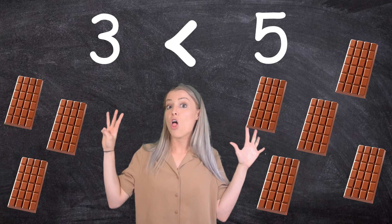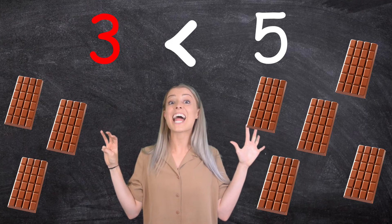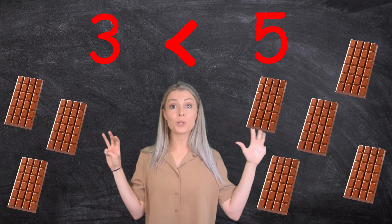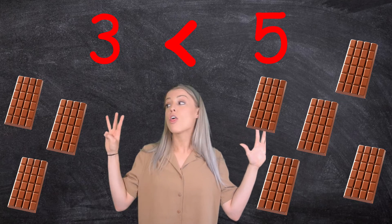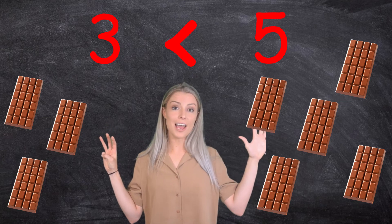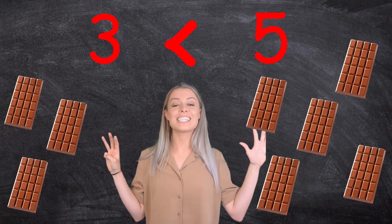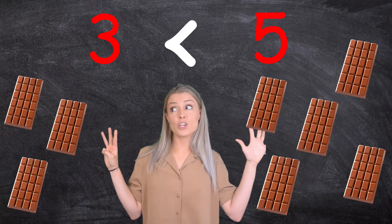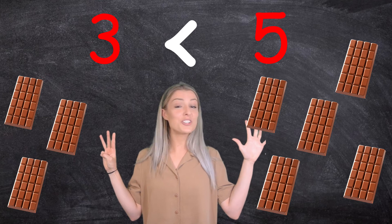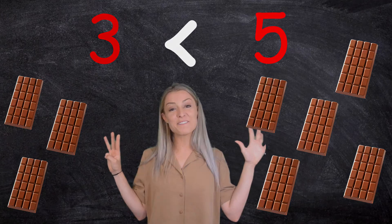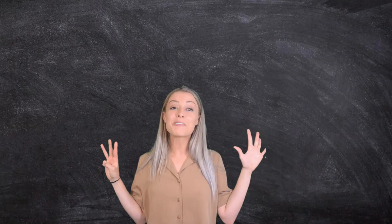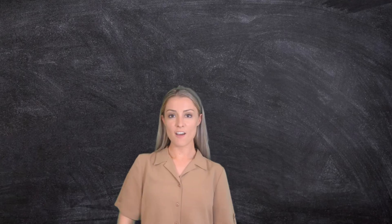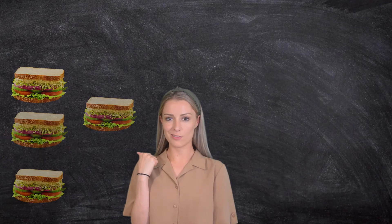Great work! Now when we say this, remember we start on this side, so we're going to say three is less than five, because it's a smaller number. Three is less than five, and we use the less than symbol, which means the crocodile has turned away from the three and he's trying to eat the five.